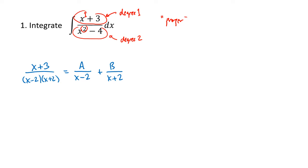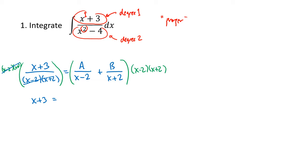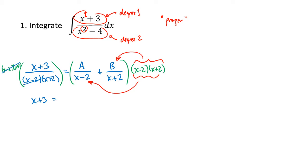To figure out a and b, we multiply both sides by the full denominator, x minus 2 times x plus 2. On the left-hand side, we get rid of the fraction and just get x plus 3. On the right-hand side, we have to be careful and distribute the multiplication. When we multiply by the a fraction, the x minus 2s divide out but we're left with x plus 2. When we multiply by the b fraction, the x plus 2s divide out and we're left with x minus 2.